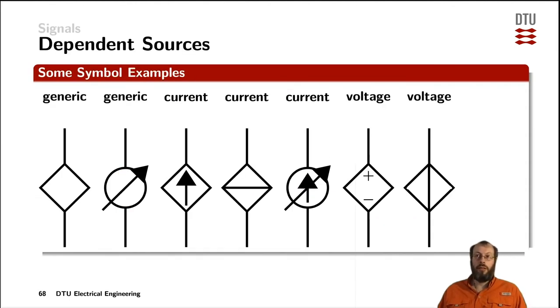Now a specific category of sources are dependent sources. They could be dependent on other voltage signals or current signals or electrical signals. But they could also be dependent on other physical parameters.